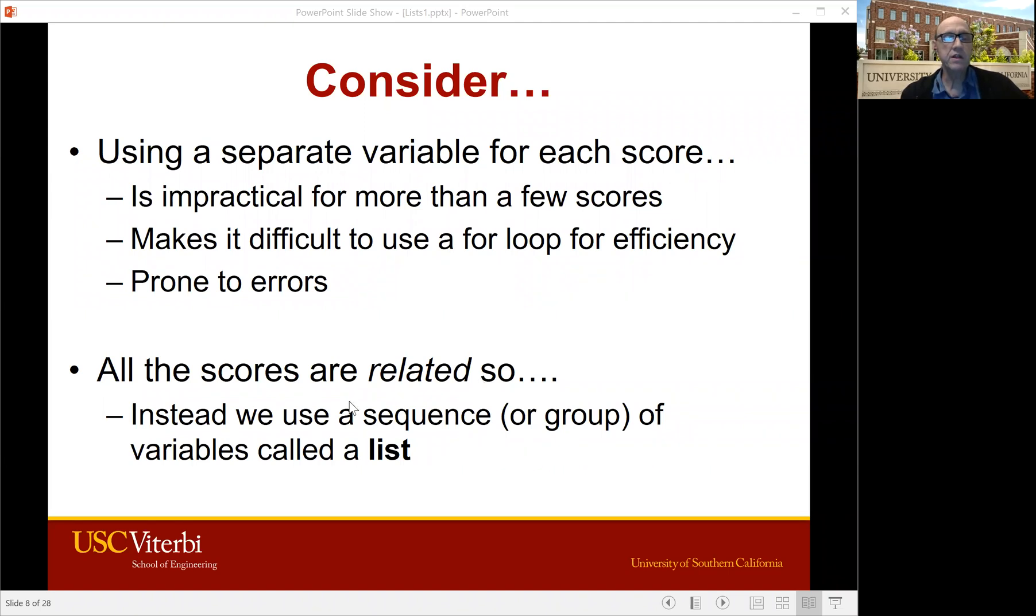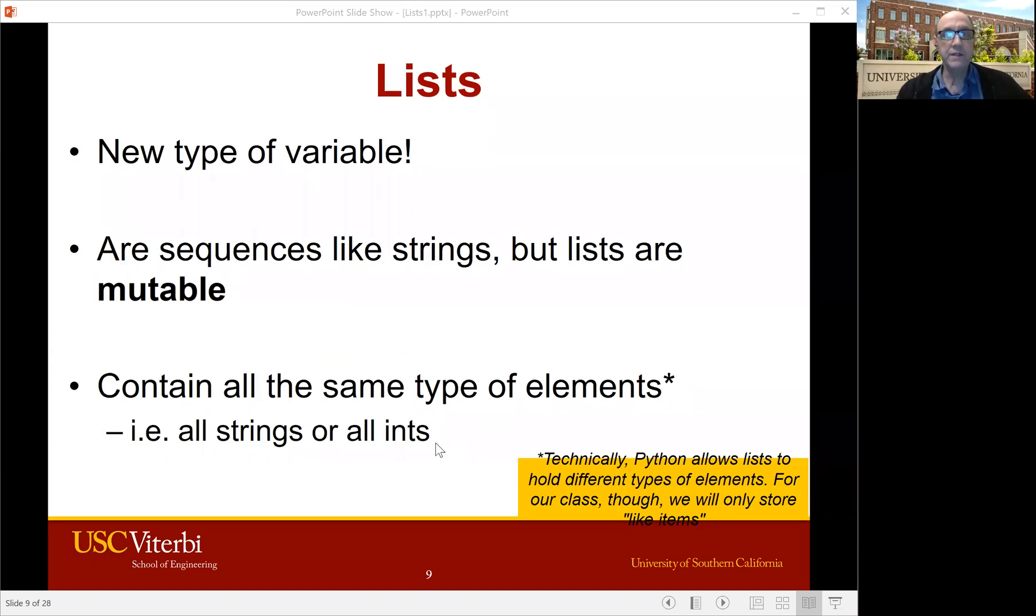So the answer is we have a sequence which is called a list. We can put all the scores on one list. So lists, it's a new type of variable. Lists are sequences like strings, but they are mutable.